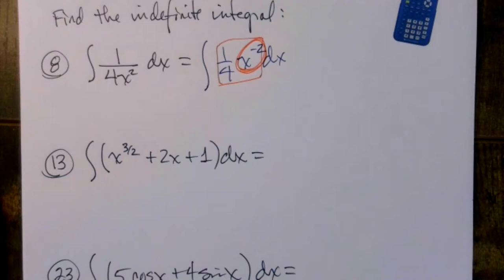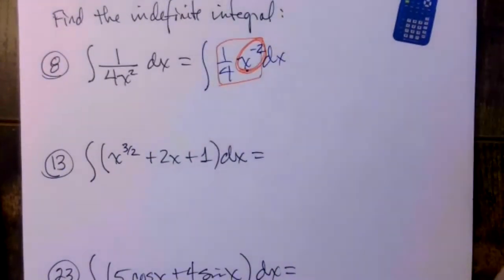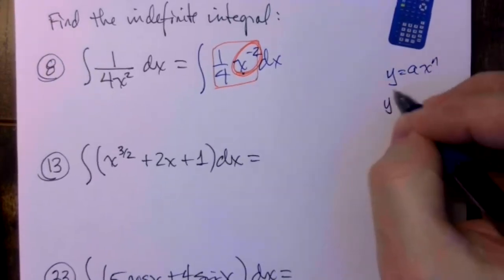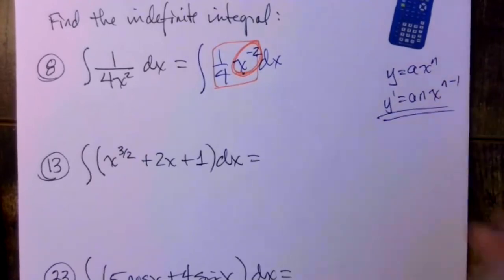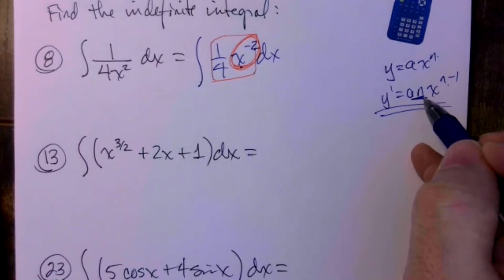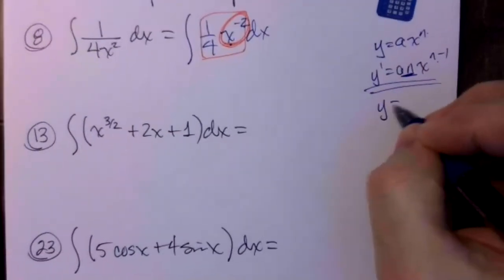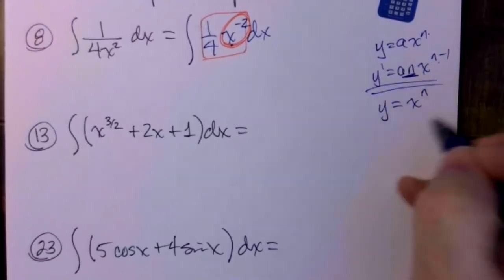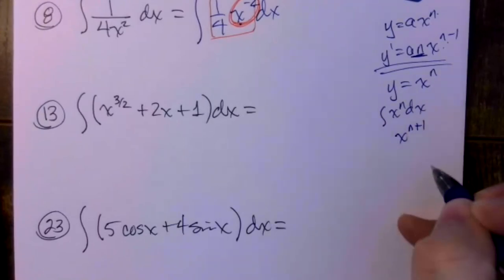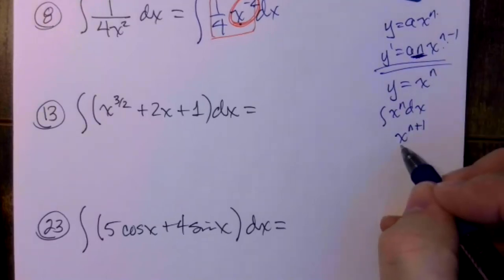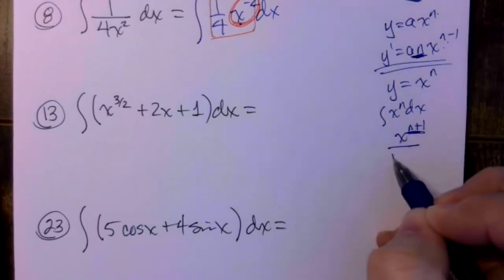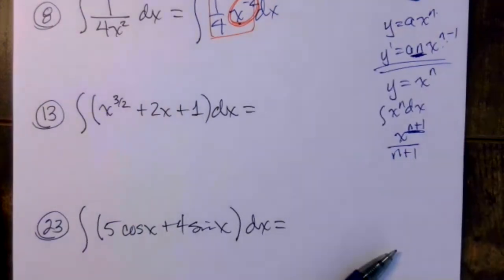This is a variable to a power, so this is a power rule situation. When we took derivatives, if we started with Ax^n and took the derivative, y' = An·x^(n-1). To go backwards, I need to add one back to that exponent and un-multiply by the old exponent — in other words, divide by the new exponent. So the integral of x^n is x^(n+1) divided by (n+1). We add one to the exponent and divide by that new exponent.